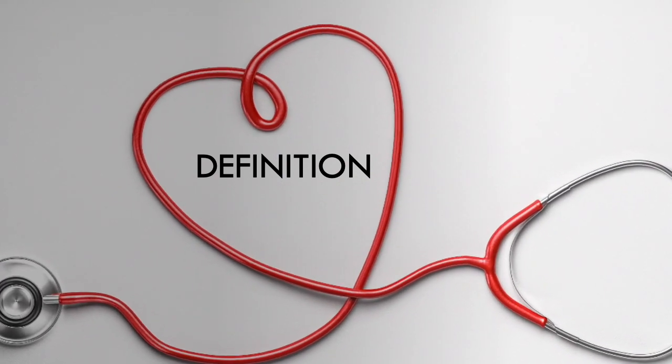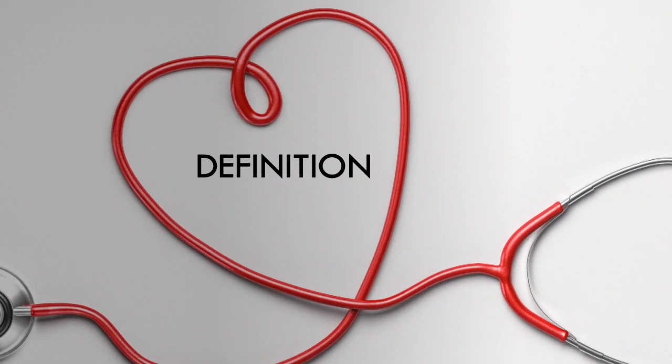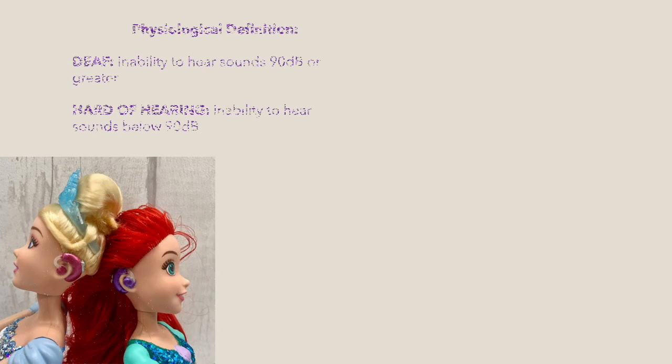Let's start with the definition. There are two categories of definitions for hearing impairments. The first category is physiological. A person is defined as deaf when they are unable to hear sounds 90 decibels or greater, and hard of hearing when sounds below 90 decibels cannot be heard.